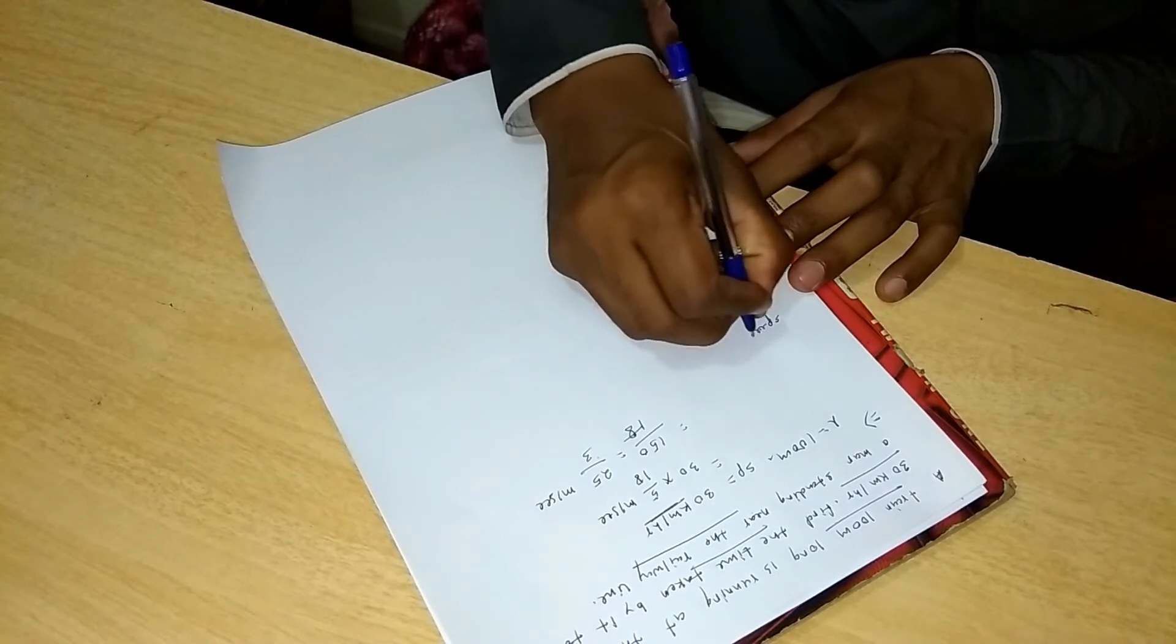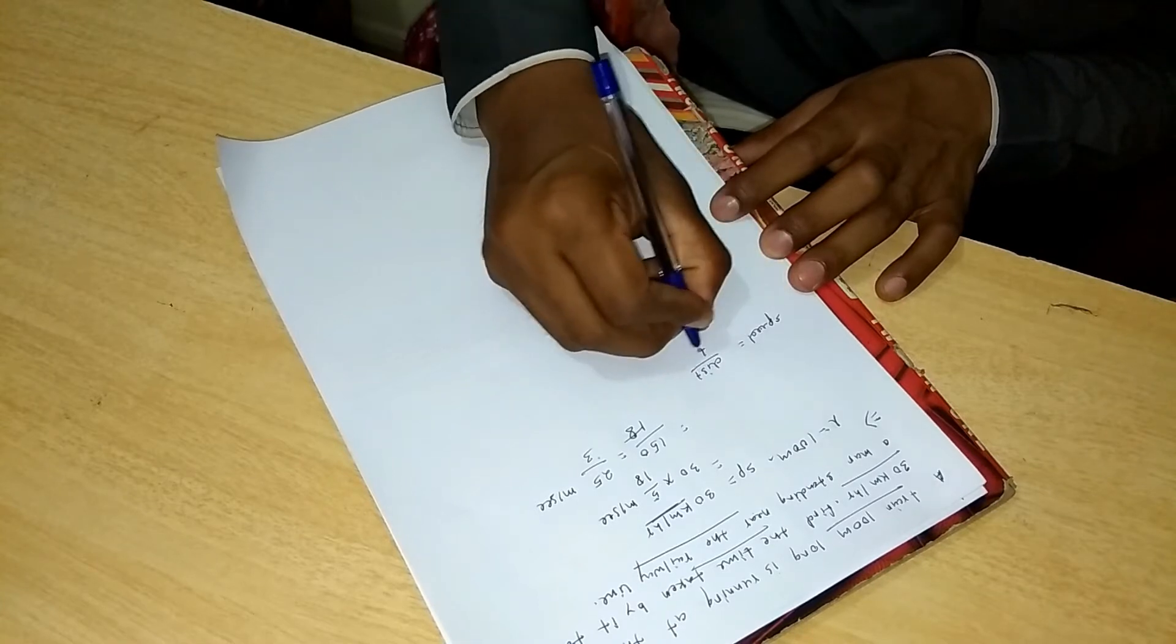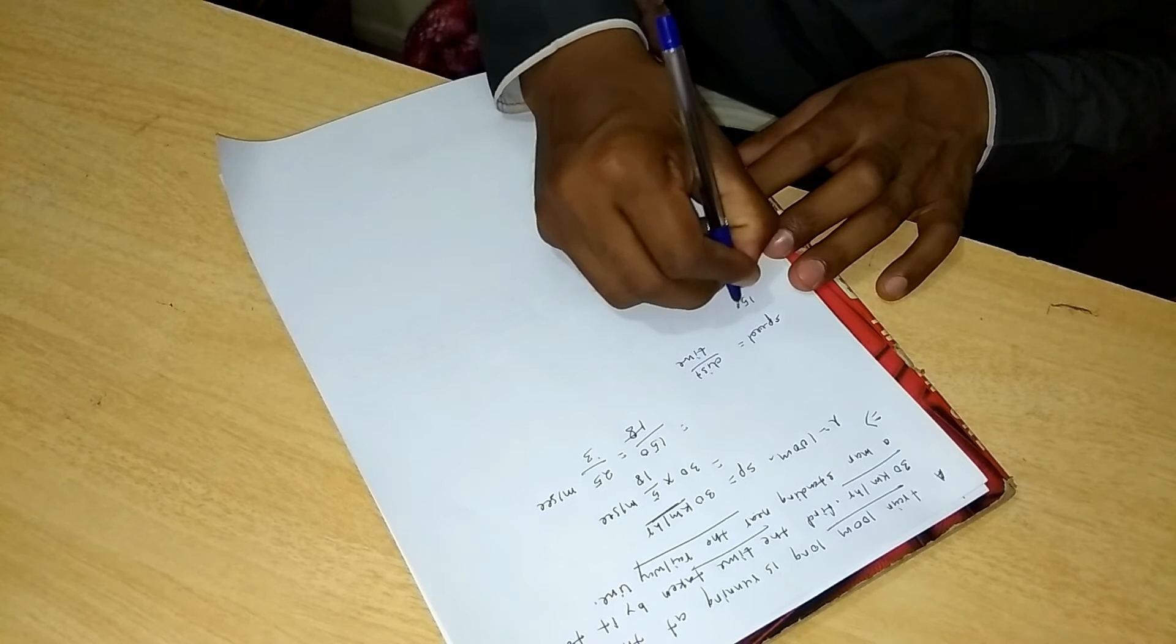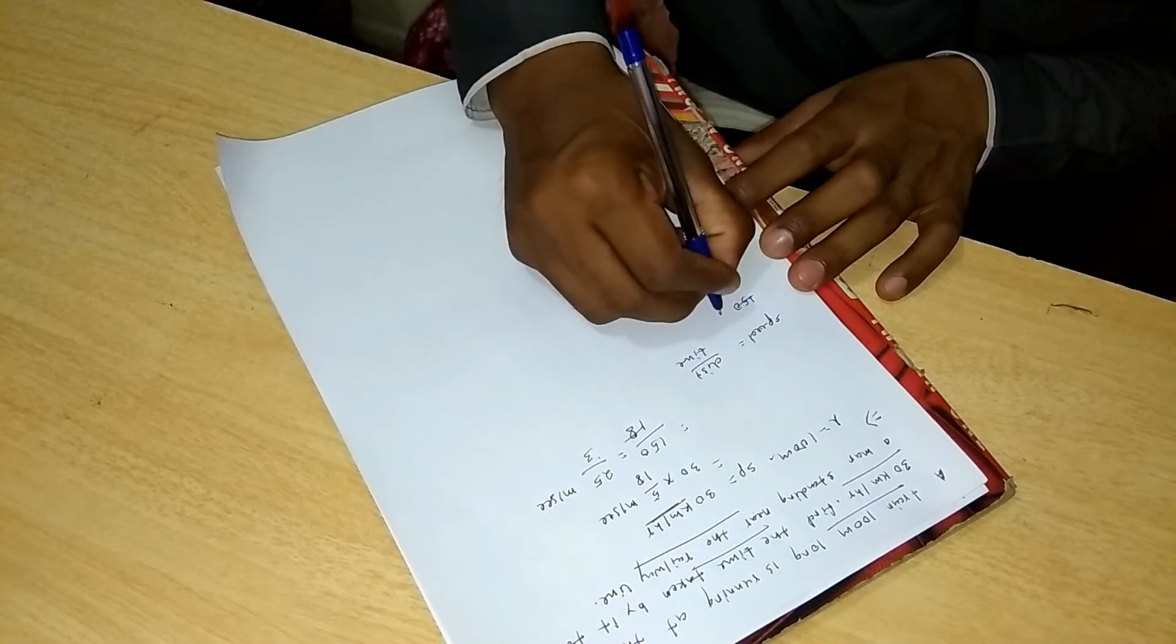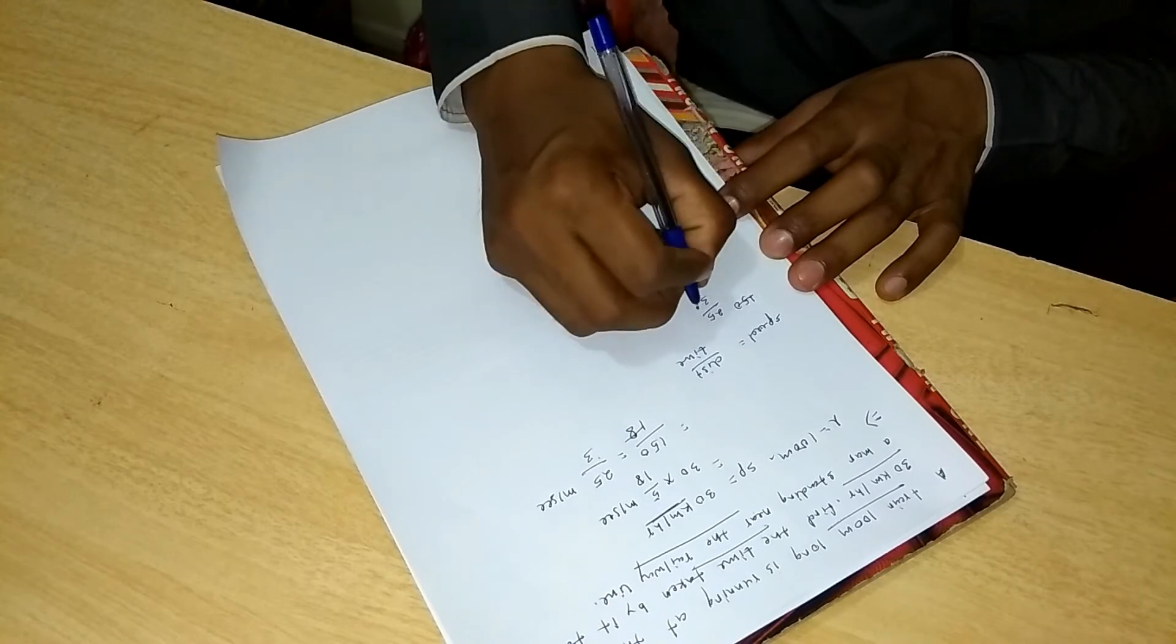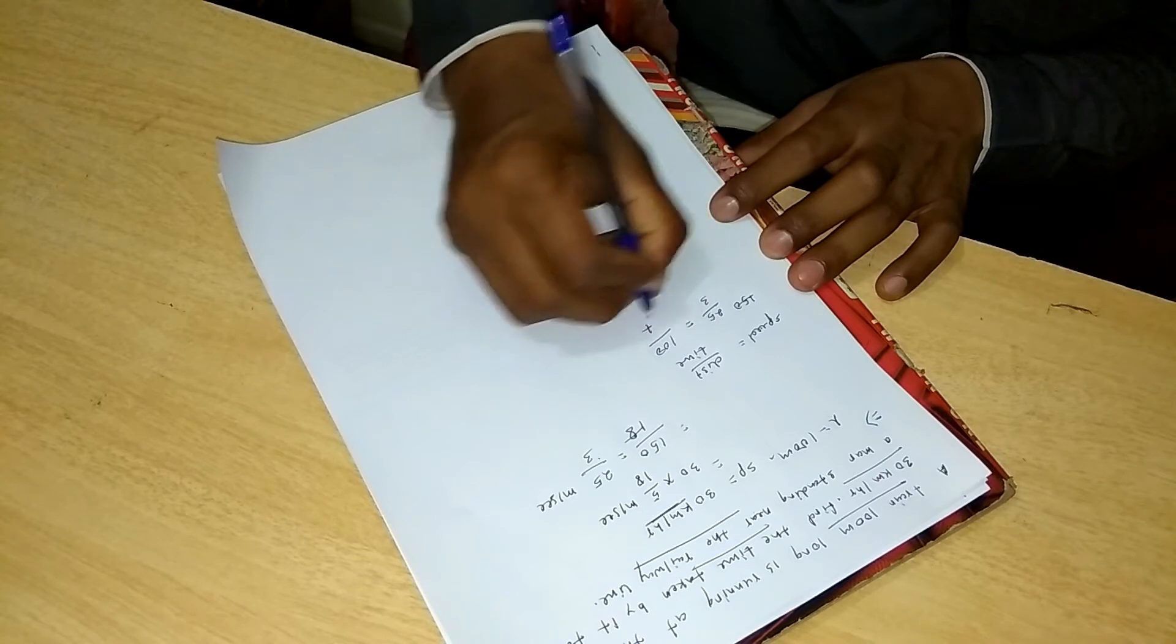Speed is equal to distance divided by time. Substitute this value in this formula: 25 by 3 is equal to distance is 100 by time. So I'm just cross multiplying.